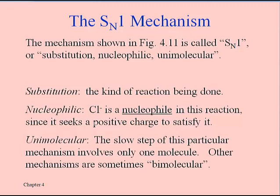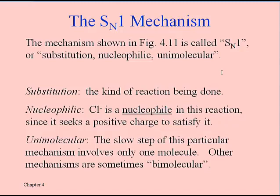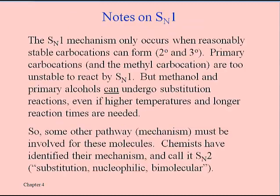Unimolecular — this mechanism is based on the formation of a carbocation, which is a single ion that forms in the rate-determining step, the bottleneck step. We're going to contrast this with a mechanism termed SN2 because it involves two molecules coming together in the rate-determining step. But for SN1, if we can get our carbocation to form, we are home free. These statements summarize what SN1 is all about.